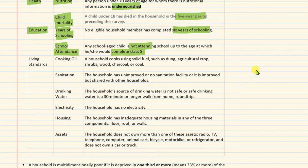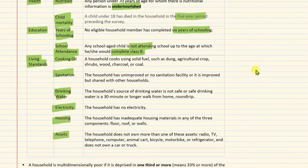Similarly, for the living standard dimension, the indicators are: cooking fuel, sanitation, drinking water, electricity, housing, and assets. If a household is using dirty solid fuel such as cow dung, agricultural crop waste, wood, charcoal, coal, etc., then it will be termed as deprived. Similarly, if there is no sanitation facility, or it is shared with another household, that household is deprived.